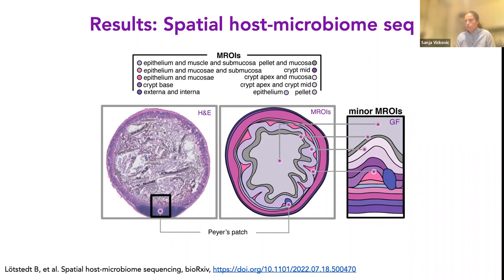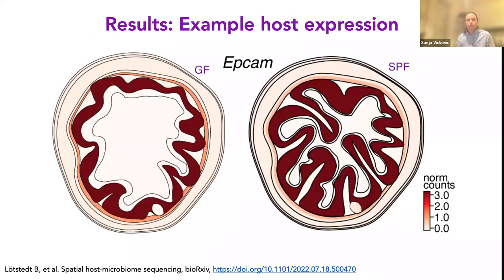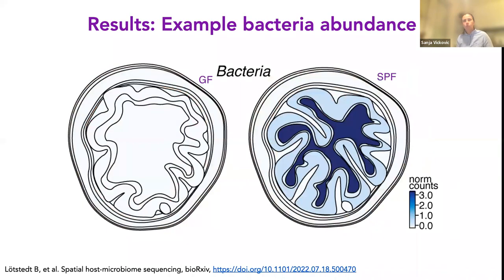To cut the story short after five years of optimizations: today the protocol is good enough. You can get host expression of probably 13,000–14,000 genes per spot. Looking at the germ-free mouse on the left and the SPF mouse on the right, expression of a typical gene called APPCAM — which lines the inner part of the gut — is expressed where it should be. When we look at bacterial expression, there's no bacteria in the GF mouse — good, the mouse was kept in sterile conditions — and we see a lot of bacteria on the right in the SPF mouse.